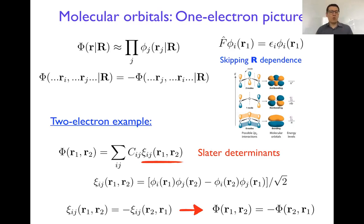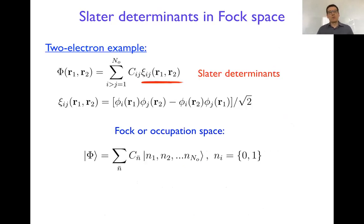What this leads to is satisfying the overall anti-symmetry of our wave function quite easily. If we construct our wave function out of this combination of Slater determinants, where in each Slater determinant we change what pairs of orbitals we put, we can create practically very accurate representations of two-electron wave functions of any kind.